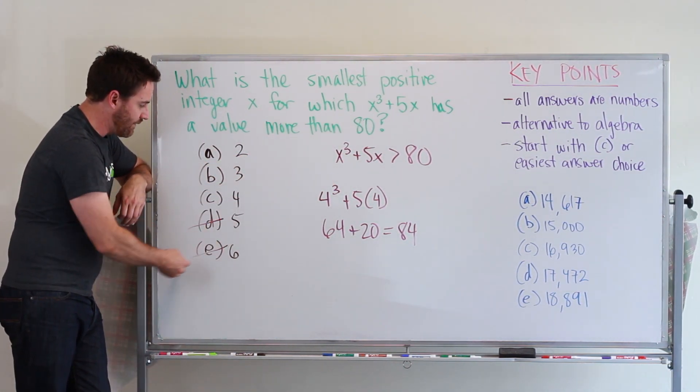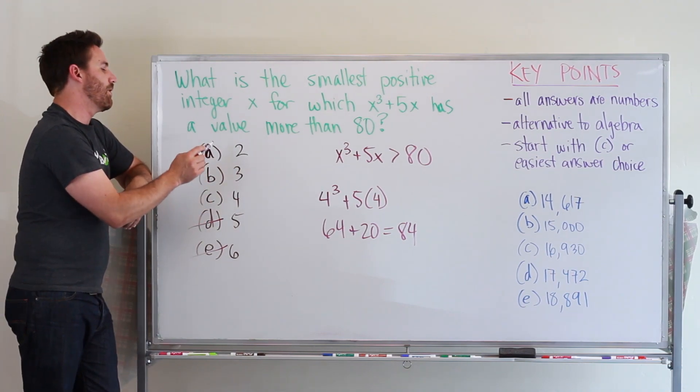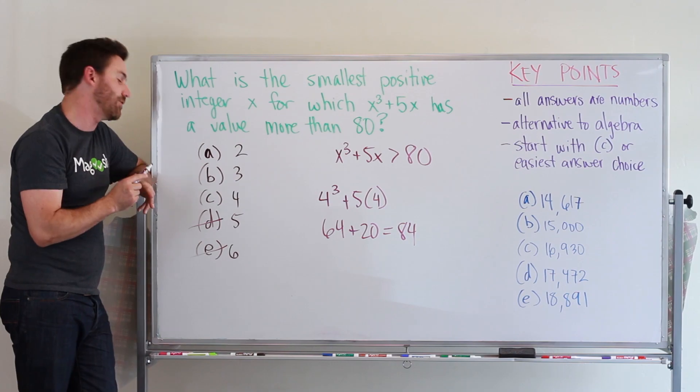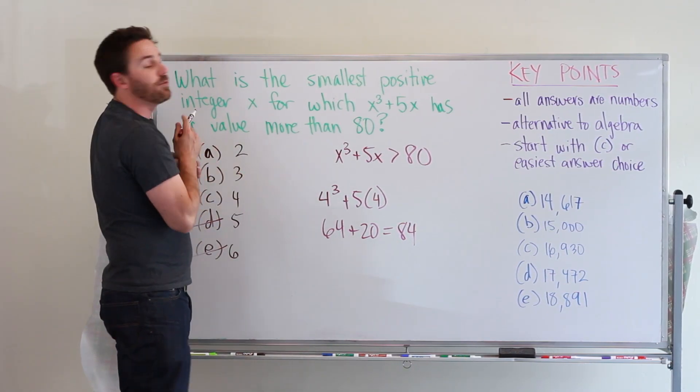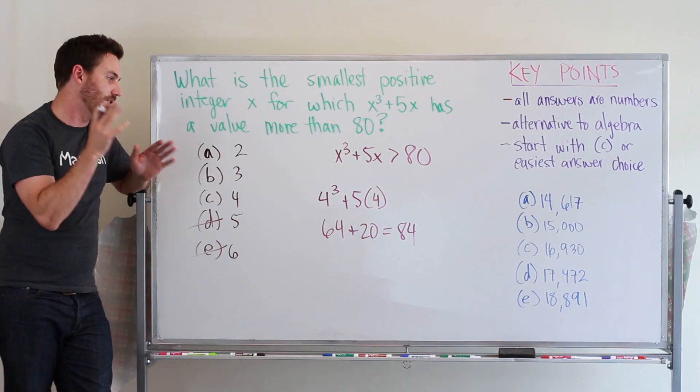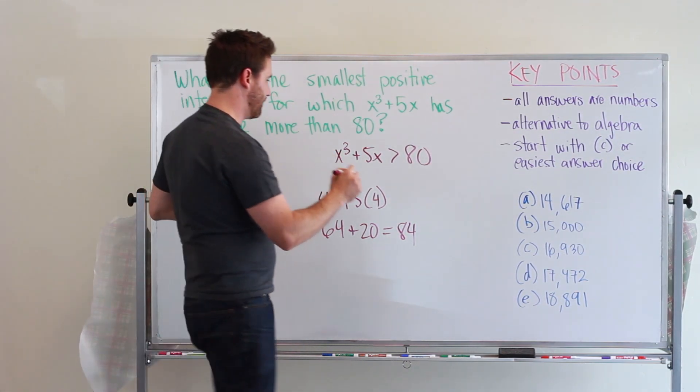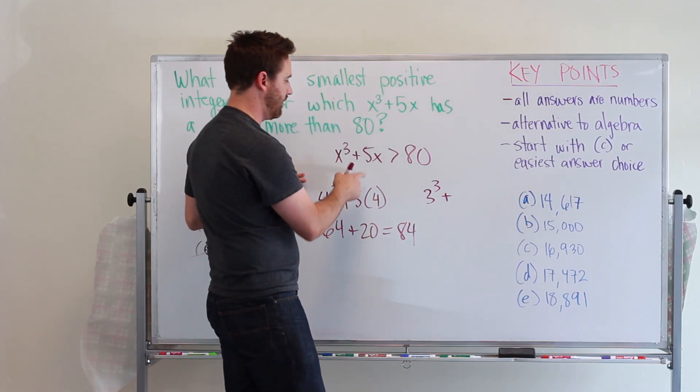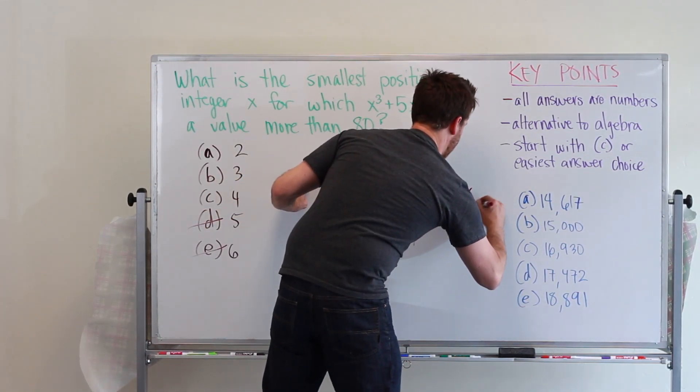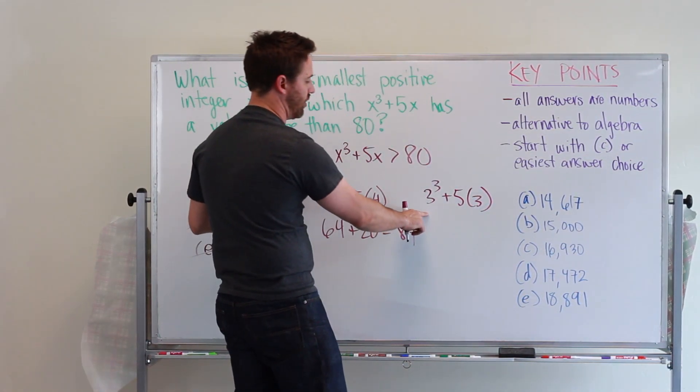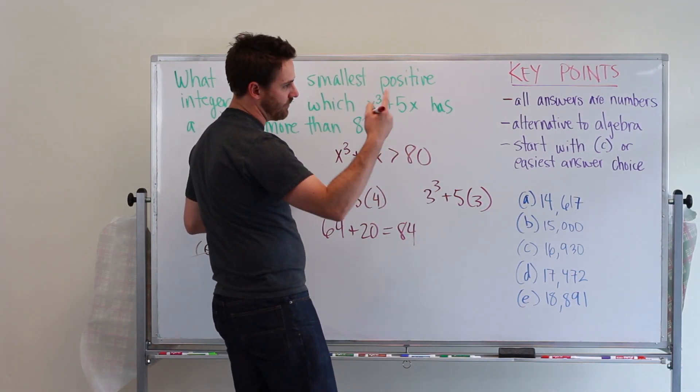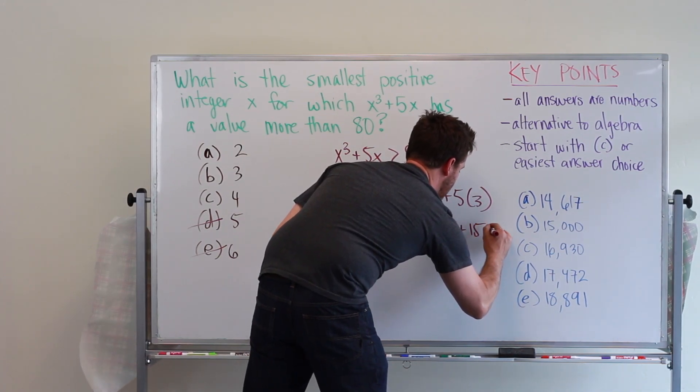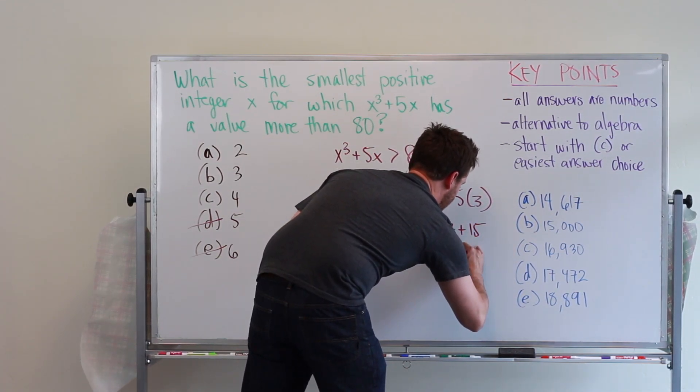So I know it's not going to be any of these, it might be C, but I want to check and make sure that it's not 3. Maybe 3 gets me even closer to 80, and so that would be the smallest integer to choose. So let's just double check. So we'll do 3 cubed plus 5 times 3, so 3 cubed, or 3 squared is 9, times 3 is 27, plus 15, that gives me 42.